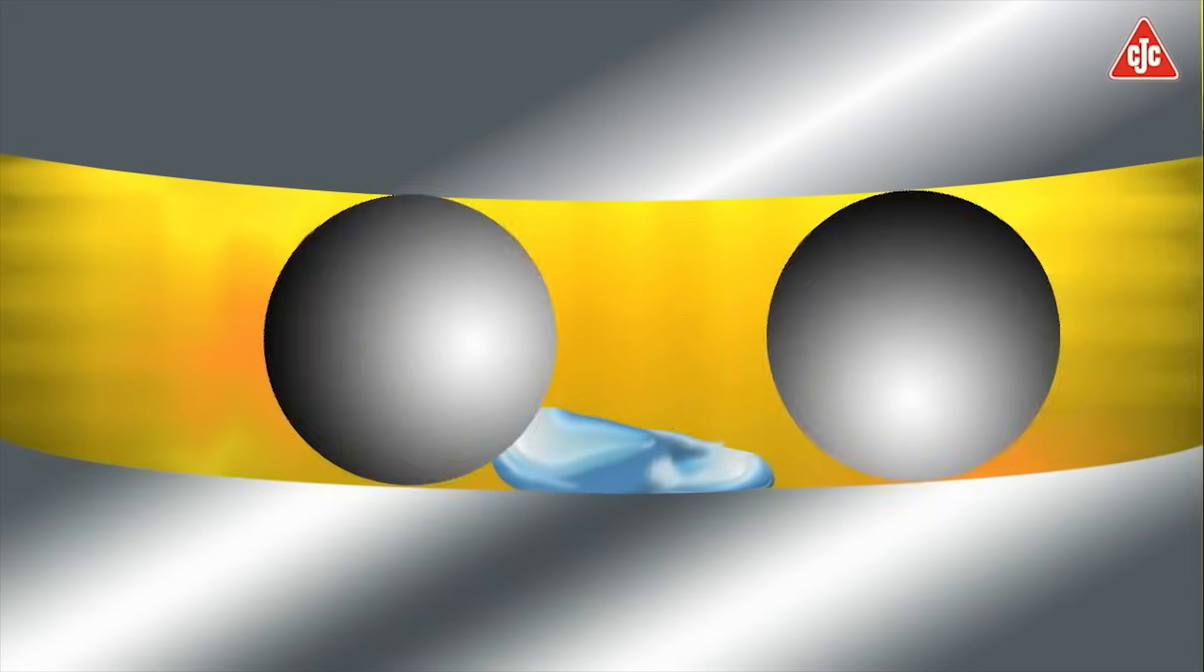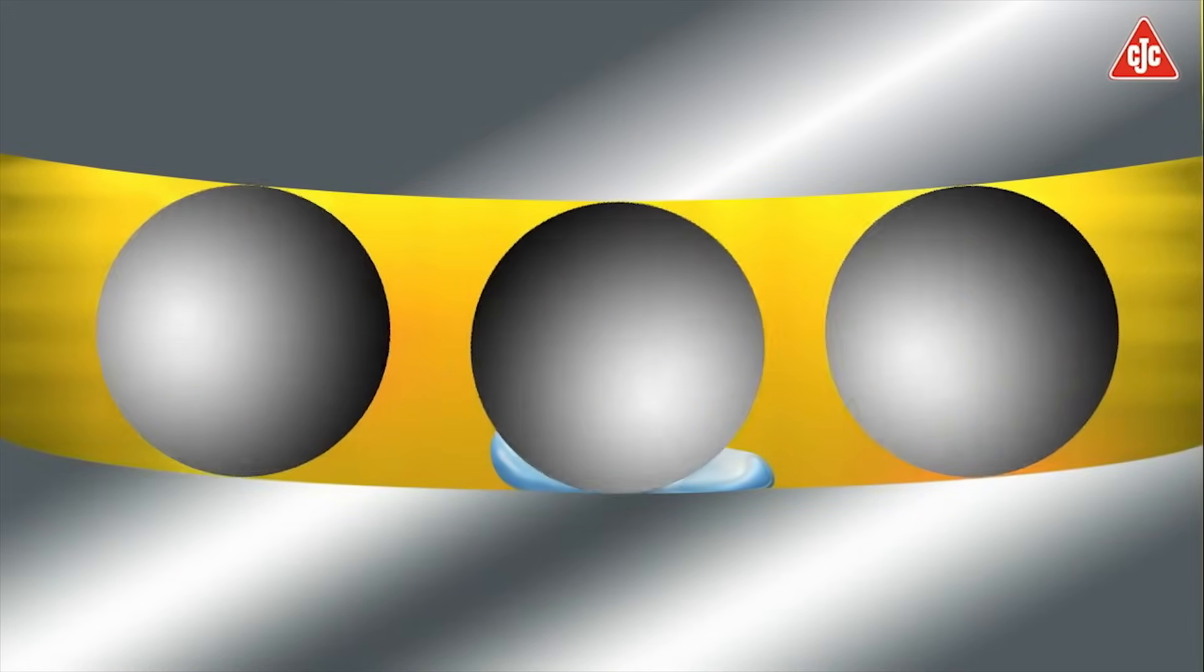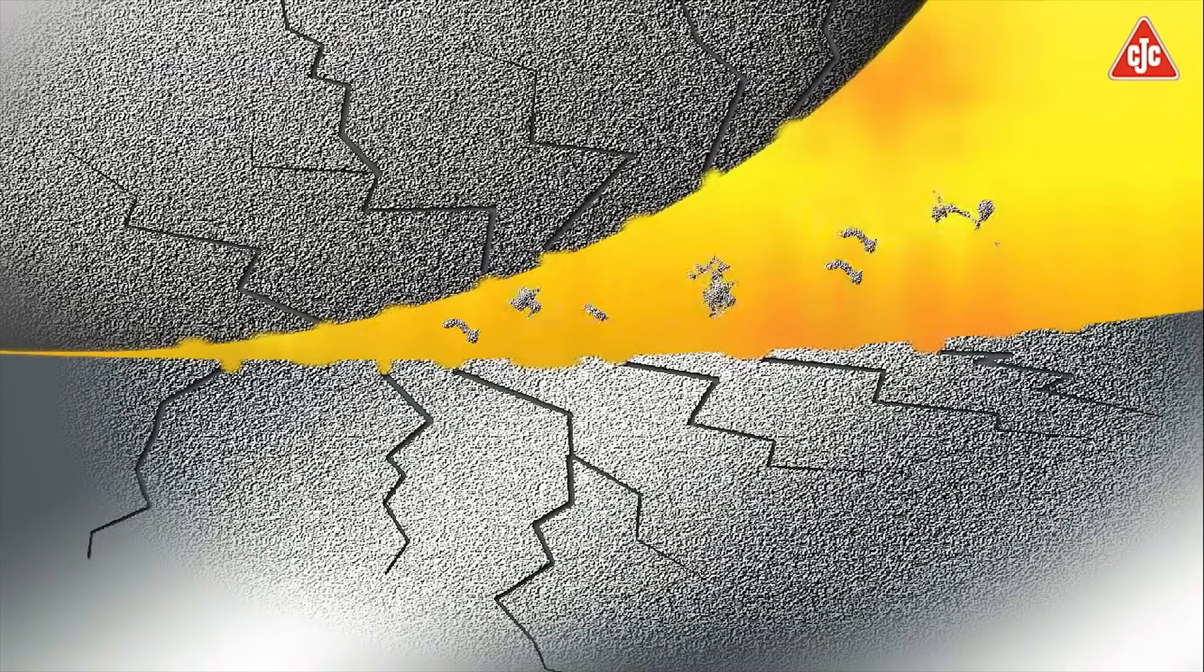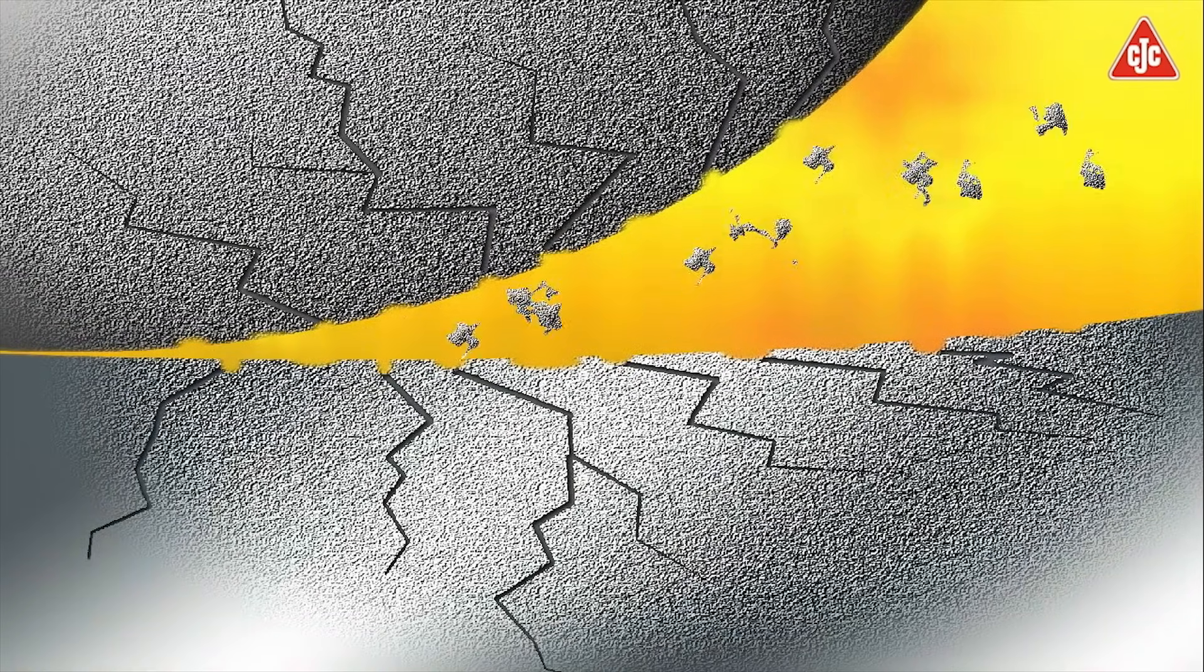Water is another major threat to machine components. Even small amounts of water reduce the lubricity of the oil. When water is exposed to high pressure, found for example in bearings and gears, water droplets collapse. This results in micro-pitting in metal surfaces.